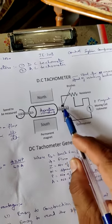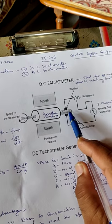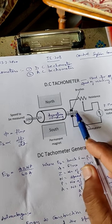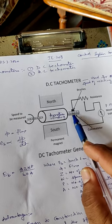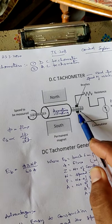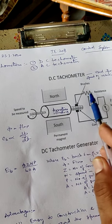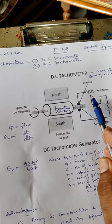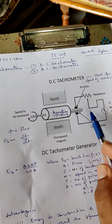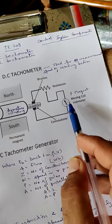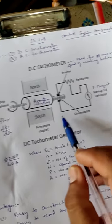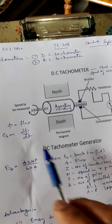This one is the commutator, and over that commutator the current can be taken by the carbon brushes. These are the two brushes. This resistor is used to control the armature current. This is the permanent magnet moving coil voltmeter.